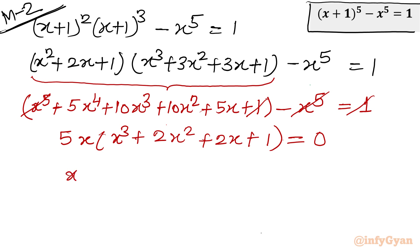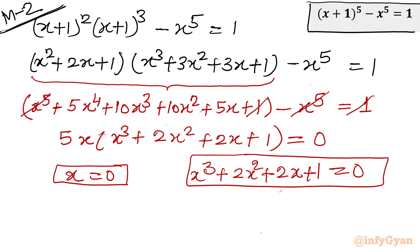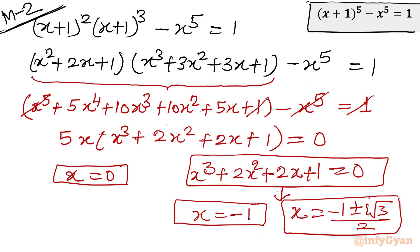From the cubic equation we again get x = −1 as a real solution, and the two complex (imaginary) solutions (−1 ± i√3) / 2, which are omega and omega squared — confirming the same four solutions as Method 1.